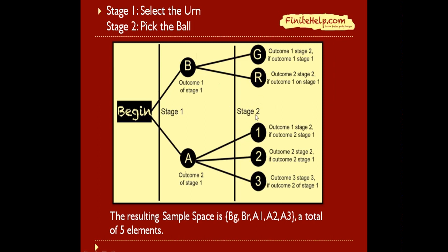In stage 2 we have picked a ball. So for urn B there are two possible outcomes, so two branches branching off of urn B, which are green and red. For urn A there are three possible outcomes, so three branches branching out of urn A, which is ball number 1, ball number 2, and ball number 3.